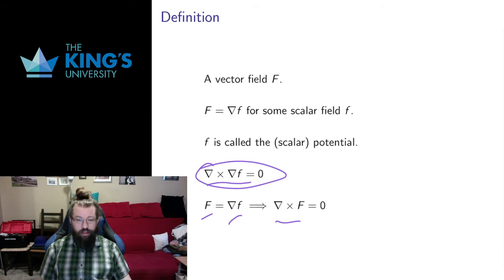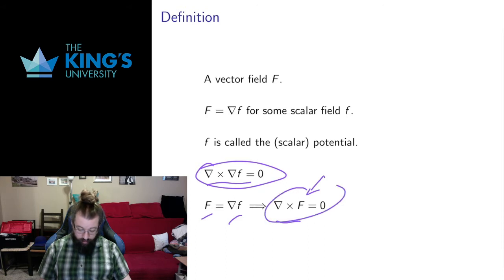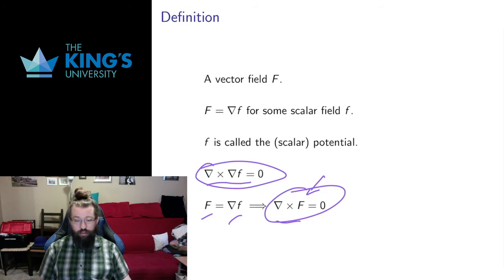I'm interested in whether I can use this to actually identify conservative vector fields — it would be really nice if this were a check. Right now the direction of implication is that conservative implies irrotational. If the curl is zero, we call that irrotational. Is the converse true? Does irrotational also imply conservative?